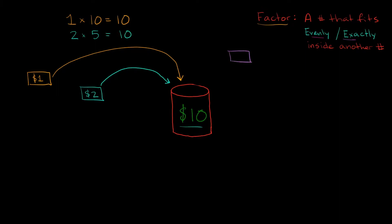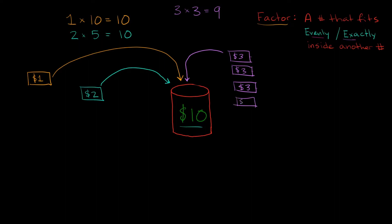What if I had a $3 bill? How many $3 bills could I fit inside of my $10 bucket? I could fit one, two, three — that gives me $3, $6, $9. So three bills gives me only $9. And if I put in a fourth $3 bill that would put me at $12, which is over the limit. So the $3 bill does not fit exactly or evenly inside of my $10 bucket.